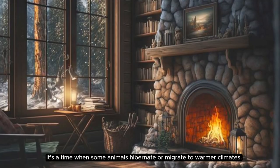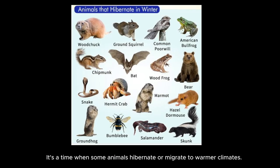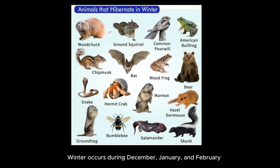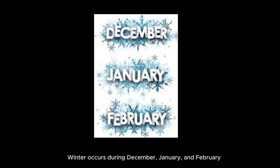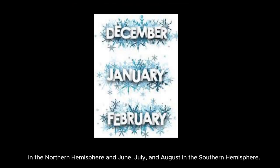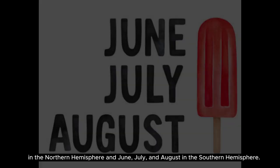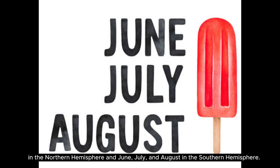It's a time when some animals hibernate or migrate to warmer climates. Winter occurs during December, January, and February in the Northern Hemisphere, and June, July, and August in the Southern Hemisphere.